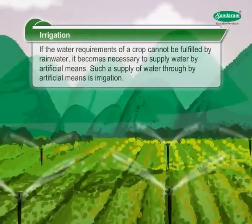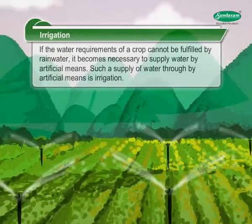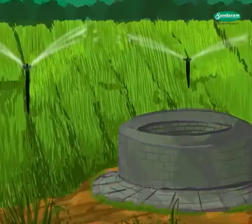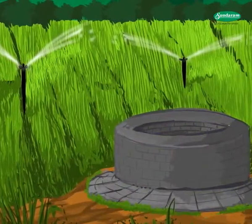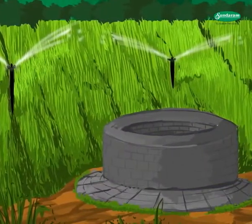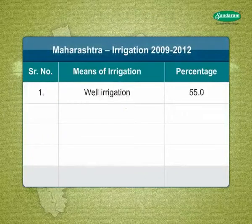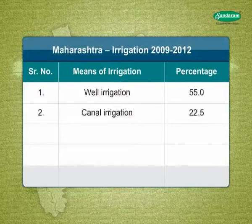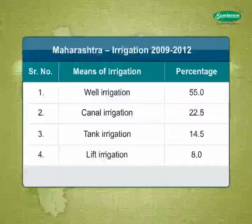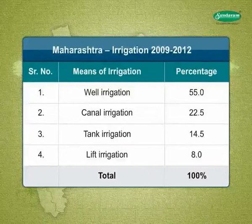If the water requirements of a crop cannot be fulfilled by rain water, it becomes necessary to supply water by artificial means. In Maharashtra, well irrigation is a prime source of irrigation. Well irrigation accounts for 55%, canal irrigation accounts for 22.5%, tank irrigation accounts for 14.5%, and lift irrigation accounts for 8%.